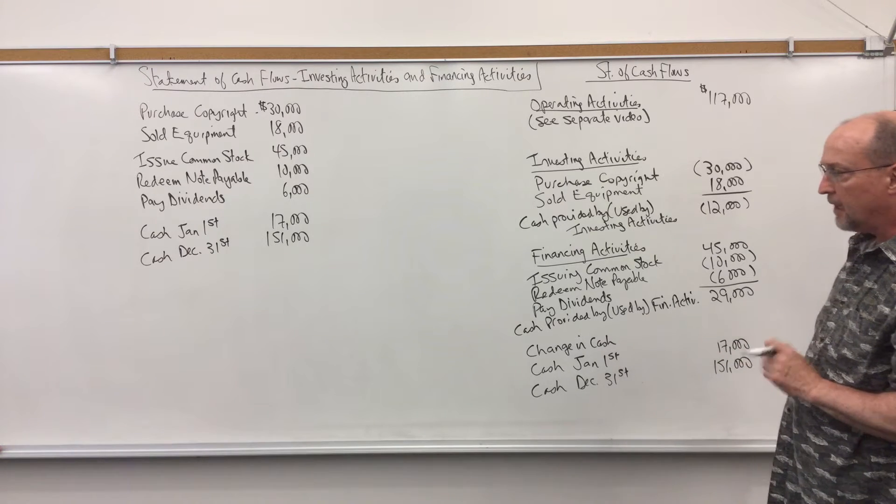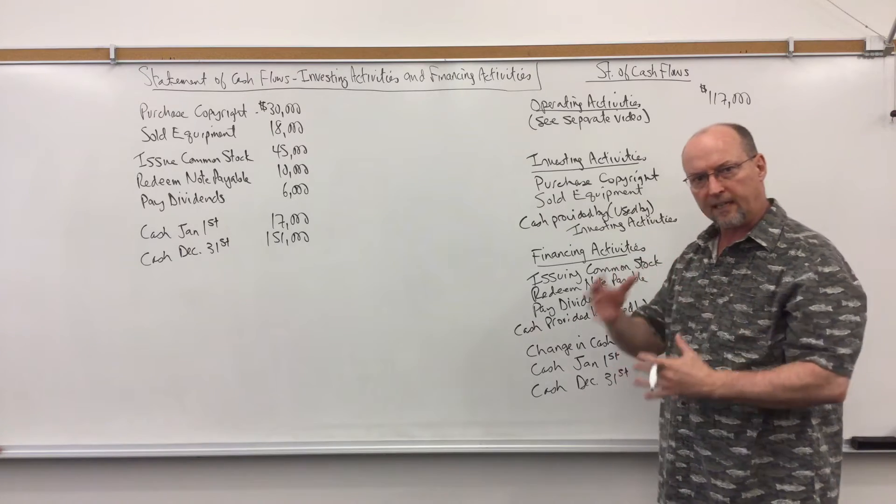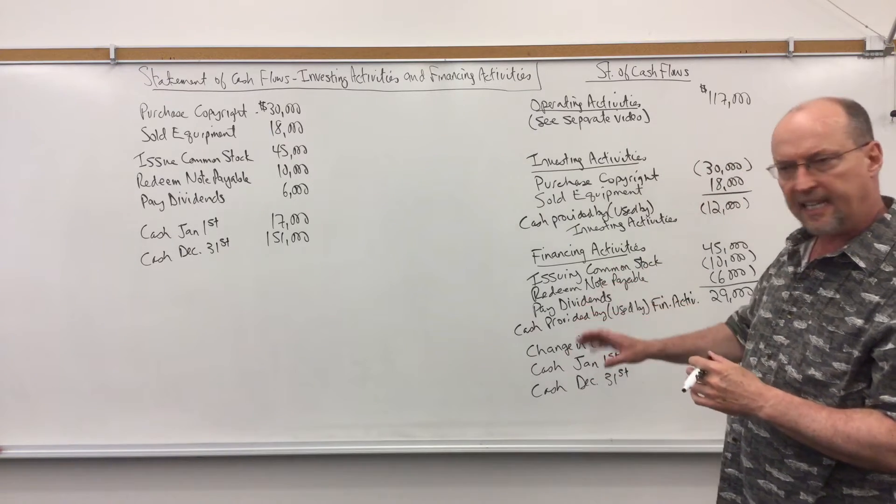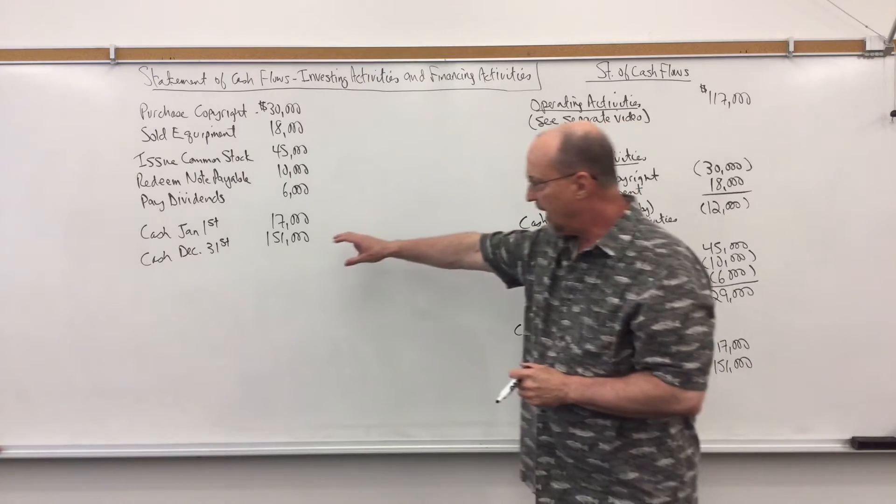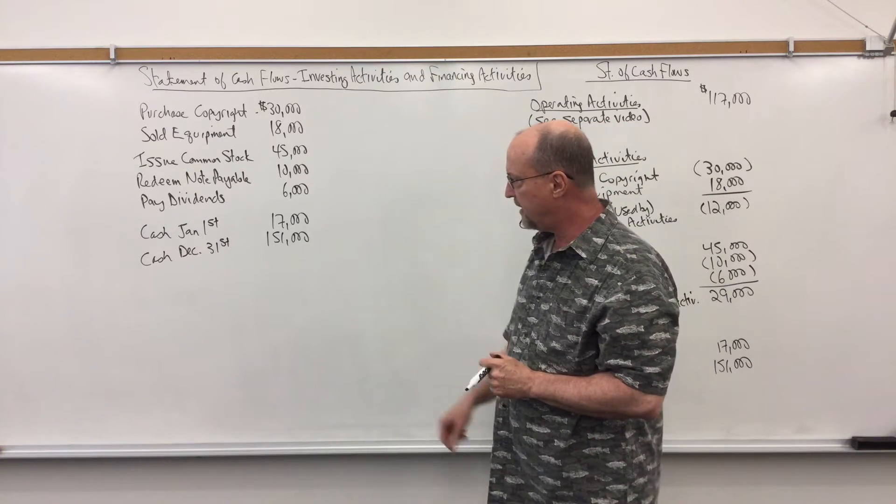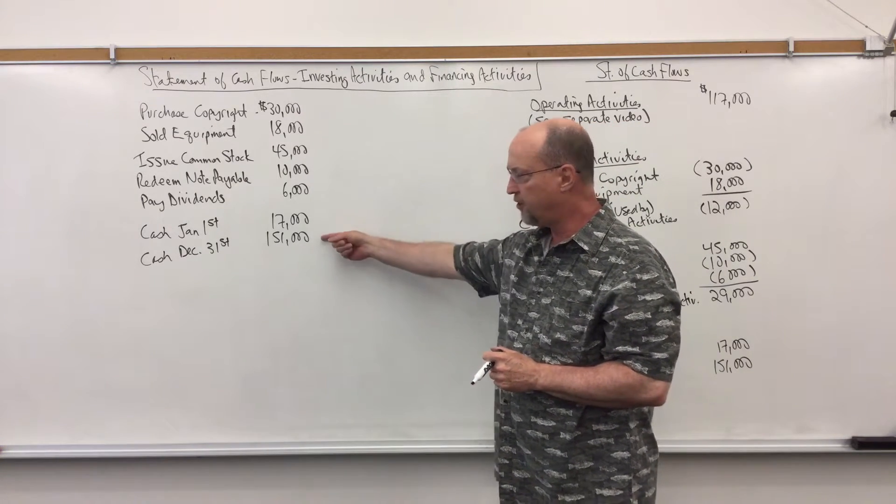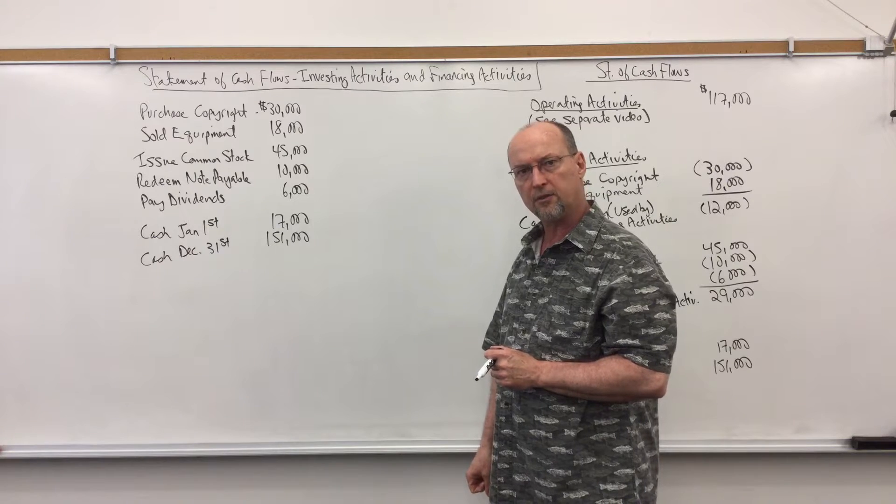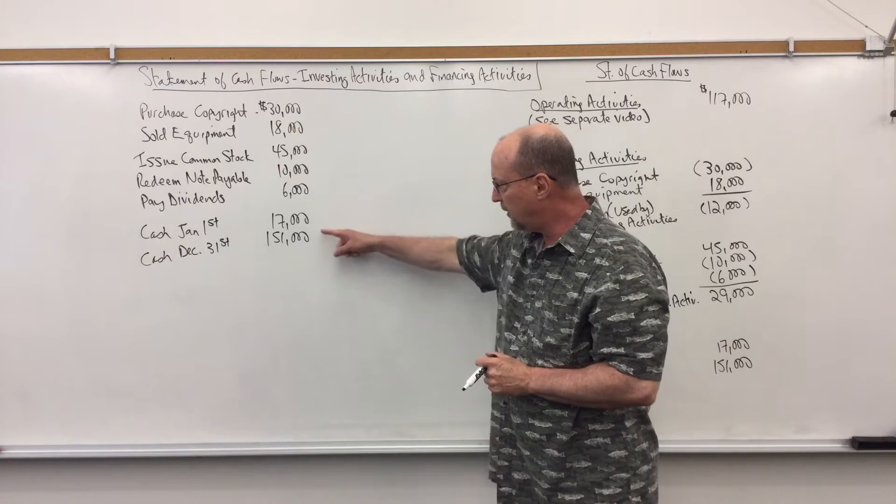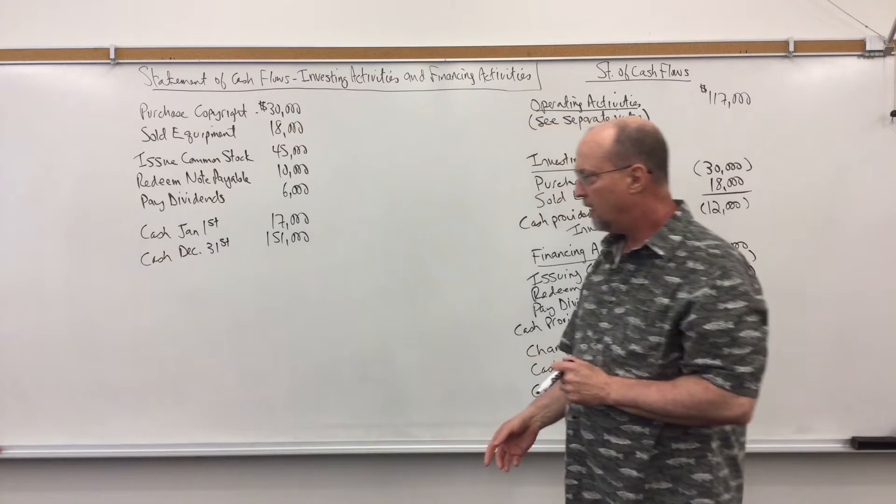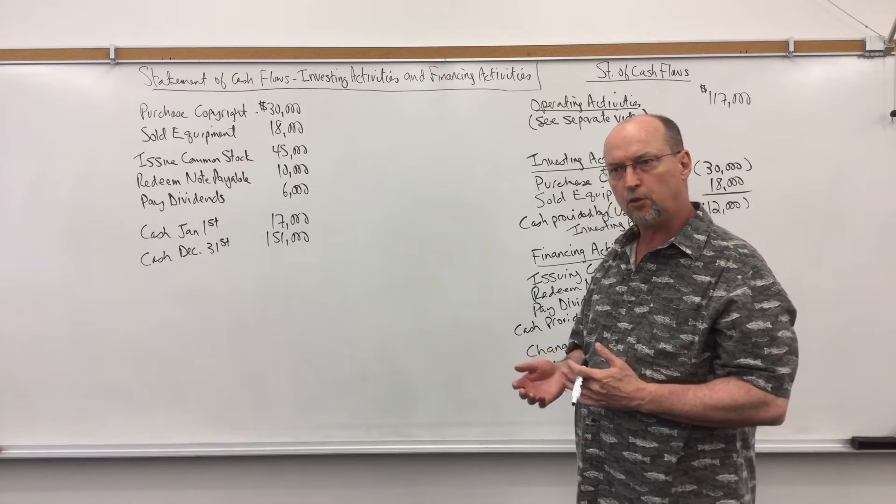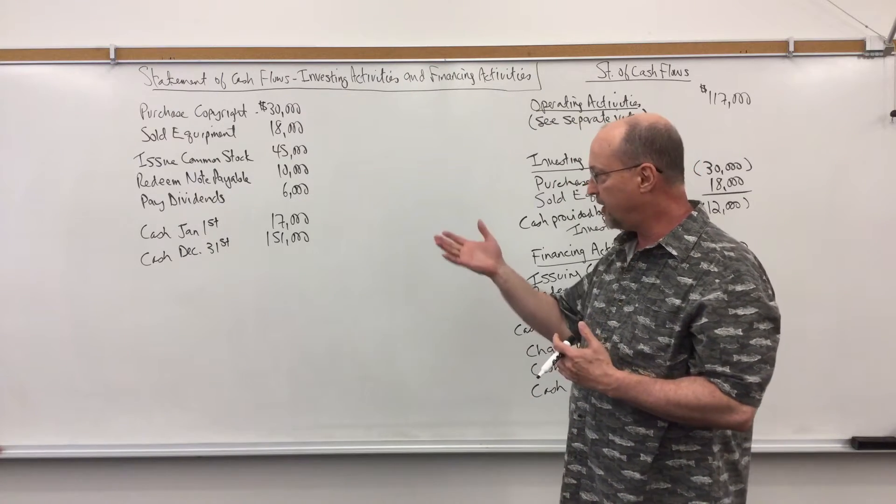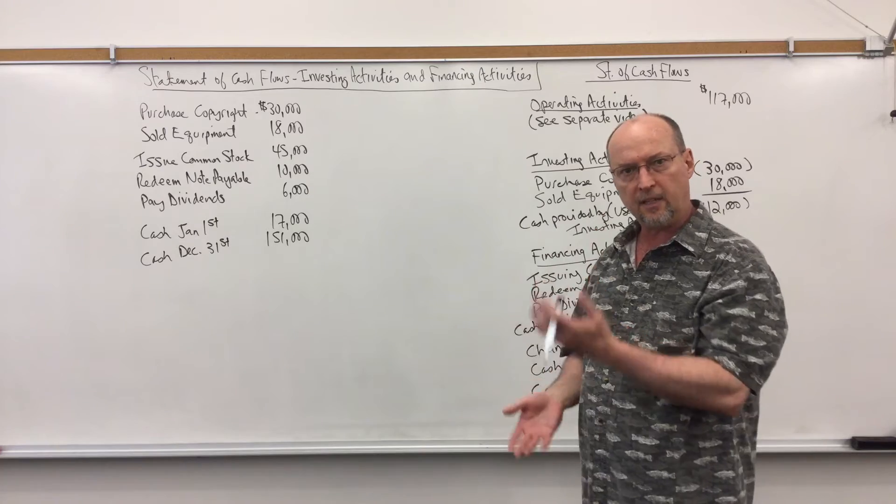Okay so now the last thing we have to do is kind of the reconciliation to beginning and ending cash. In our example at the beginning of this year we had $17,000 in cash. At the end of this year we had $151,000 cash. That's a difference of $134,000. And the statement of cash flows helps us to understand why did cash go up or down from the beginning to the end of the year.